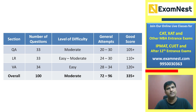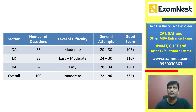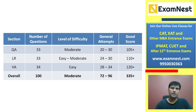Logical Reasoning section easy to moderate था। 24 to 30 attempts normal range है जो students ने attempt किये। Students के feedback के according, एक set में थोड़ा issue था, वहाँ कुछ error थी — Data Interpretation का एक set था। High hope है कि अगर उस set में गड़बड़ है और आपने attempt किया होगा, तो bonus mark ज़रूर मिलेगा। 110 plus एक अच्छा score माना जाएगा।